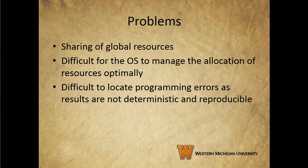Concurrency presents difficulties that we need to overcome. For concurrency, we have the sharing of global resources. If two processes both want to make use of the same global variable and both perform reads and writes on that variable, the order in which the various reads and writes are executed is critical. We'll be taking a look at this when we examine race conditions.